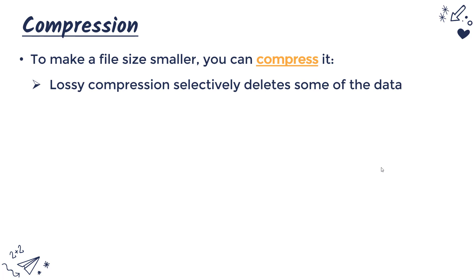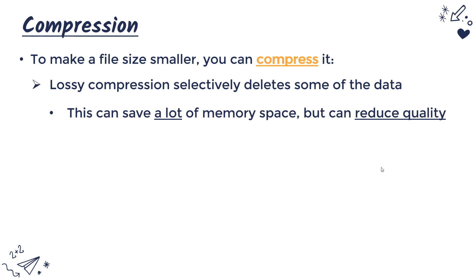There are two ways compression programs can work. The first is lossy compression — in this type the program selectively deletes some of the data, looking for what it can remove without having a large effect. This can massively reduce your file size because you're actually deleting some of the data, but it does reduce quality.